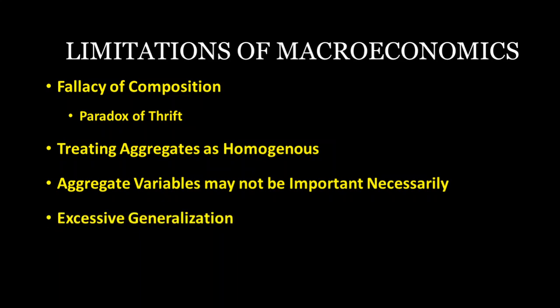The fourth point is excessive generalization. Despite the immense importance of macroeconomics, there is a danger of excessive generalization from individual experience to the system as a whole. For example, if an individual withdraws his deposits from the bank, there is no harm in it. But if all persons rush to withdraw deposits, the bank would collapse.